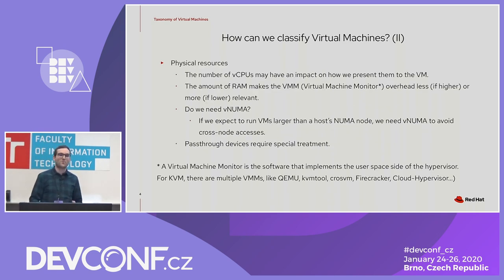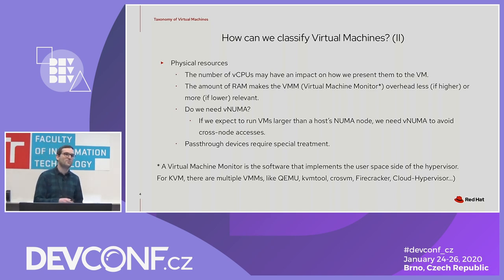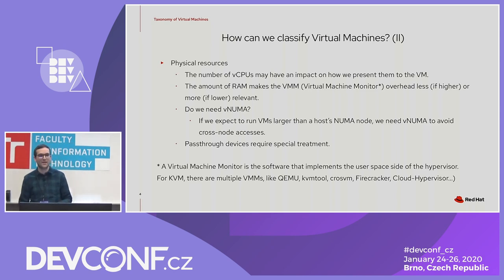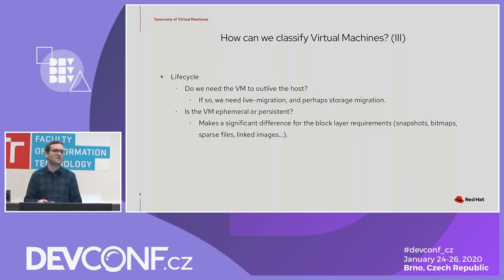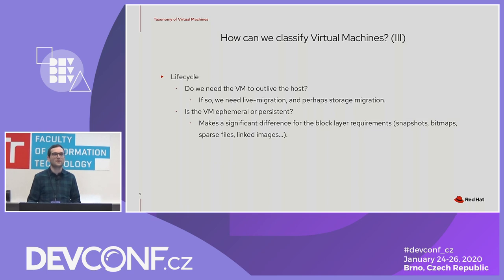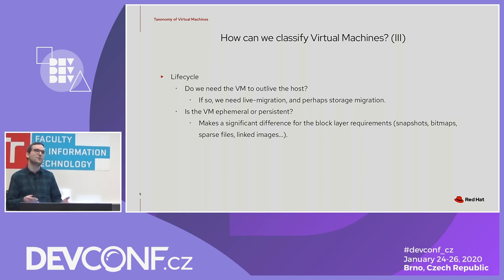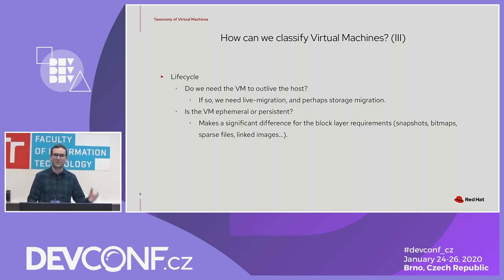It's also important to determine whether we need to implement virtual NUMA. If we expect to run large VMs potentially larger than a single NUMA node on the host, we'll need to implement virtual NUMA to partition the guest into multiple nodes to avoid cross-node accesses. Pass-through devices may also require special treatment. The final aspect is the size and lifecycle of the VM itself — whether it needs to outlive the host, requiring migration mechanisms, and whether it's persistent, which means caring about block layer requirements, snapshots, bitmaps, sparse files, and linked images.